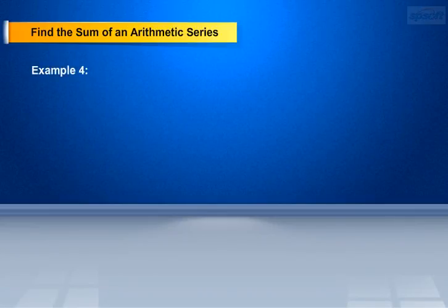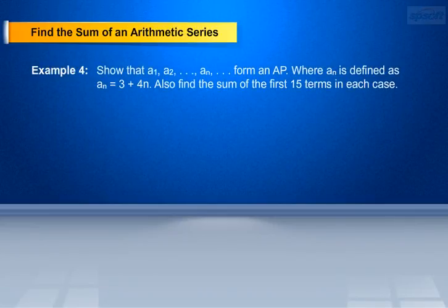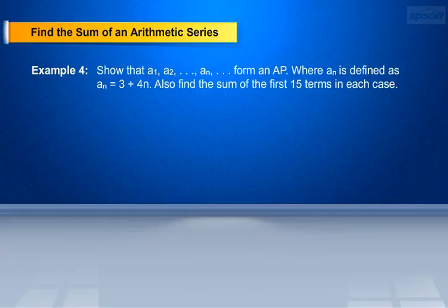Example 4: Show that a1, a2, and so on, a_n form an AP, where a_n is defined as a_n equals 3 plus 4n. Also find the sum of the first 15 terms. Solution: Given a_n equals 3 plus 4n.